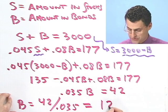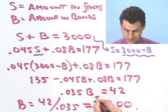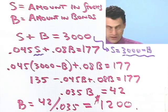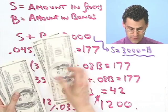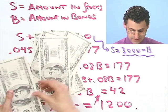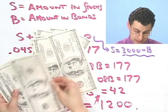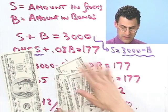And what does that equal? That equals $1,200. So that means we invested $1,200 in the bond fund.